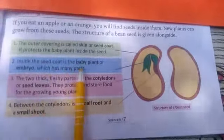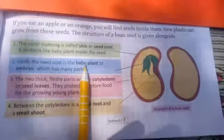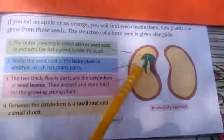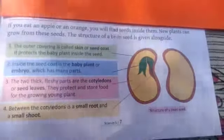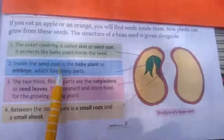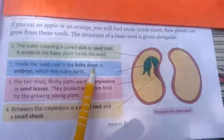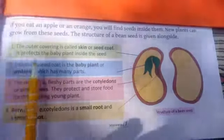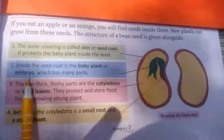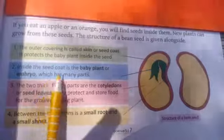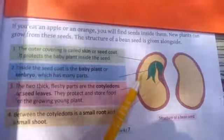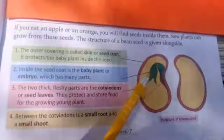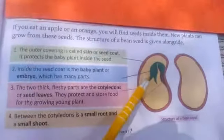Next, we will study about the baby plant. Inside the seed coat is the baby plant, also called the embryo. The second name of the baby plant is embryo, and it has many parts. This baby plant will develop into a mature plant in the future.